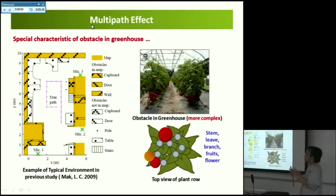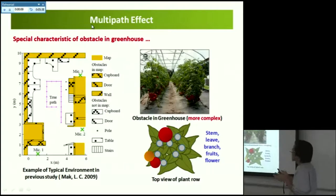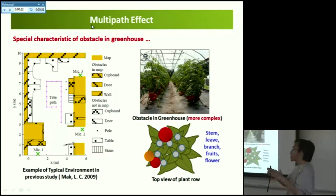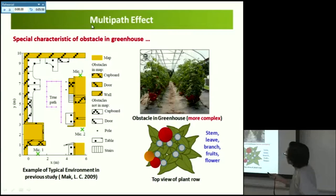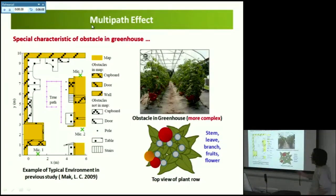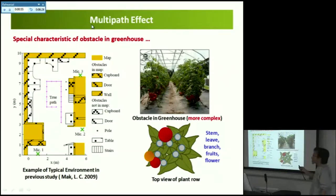We also have to understand that the obstacle in greenhouse is much different from obstacles in previous studies. Previous studies usually worked in office buildings where obstacles are simple shapes like walls with not so many obstacles. In a greenhouse, our obstacle is a plant row with many stems, branches, leaves, and fruit — it is much more complex than the building condition.